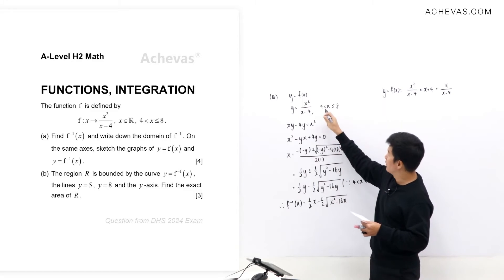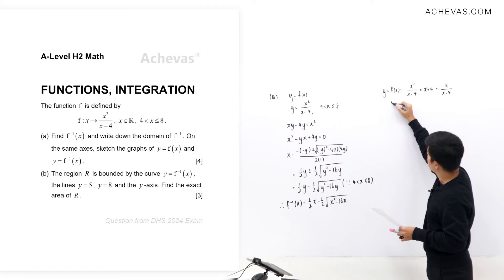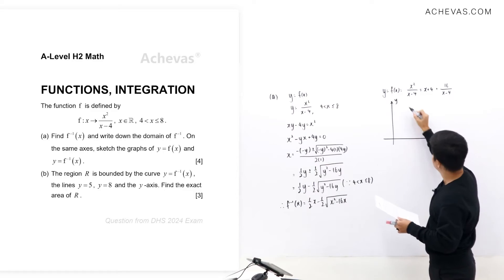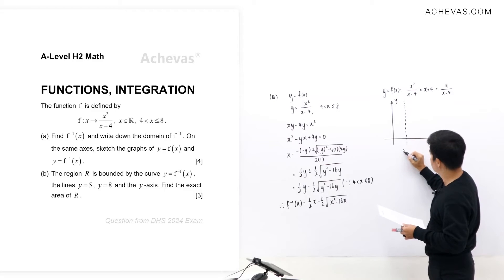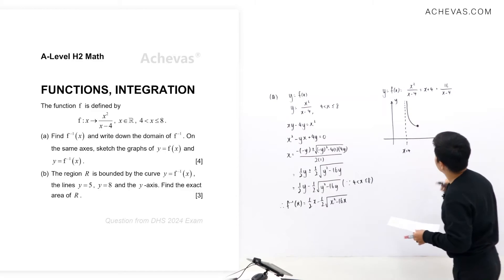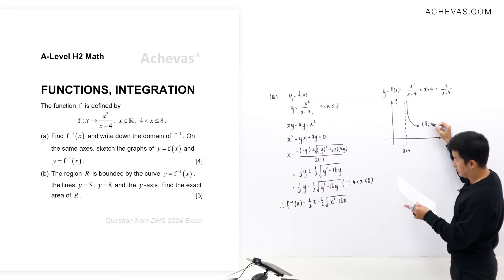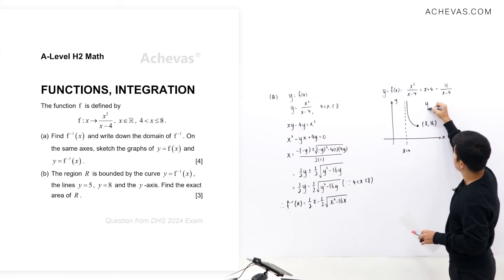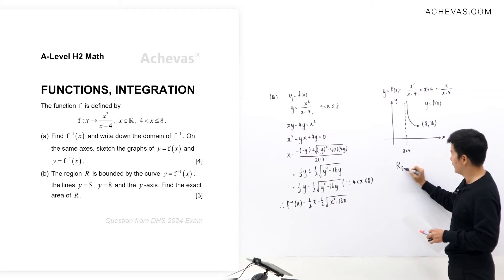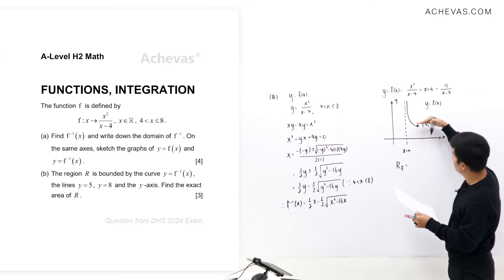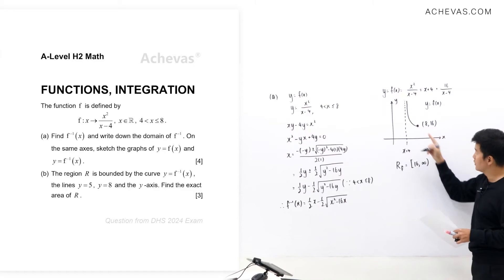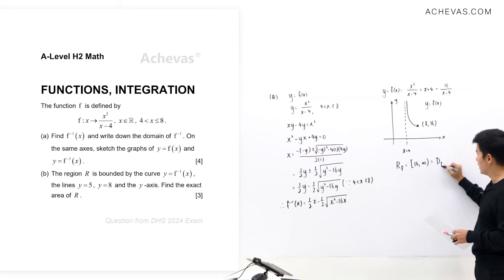Looking at the region of the graph for the domain 4 < x ≤ 8, the graph approaches the vertical asymptote x = 4 and at x = 8, the output is 16. So the range of f is [16, ∞), which gives us the domain of f inverse: [16, ∞).